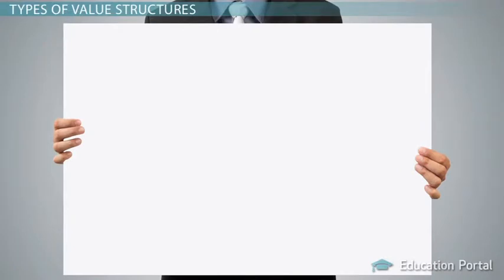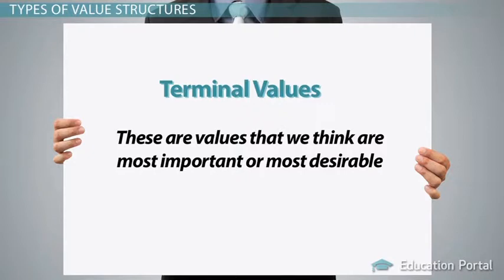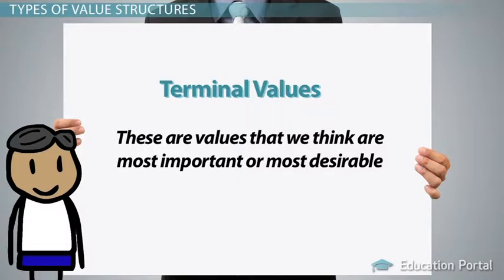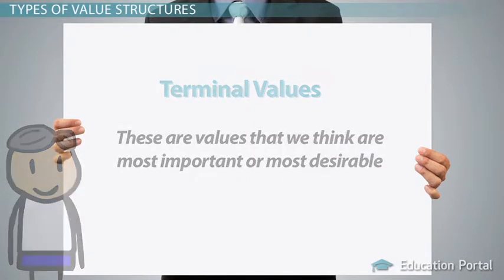There are four basic value structures. Terminal values. These are values that we think are most important or most desirable. They are desirable states of existence that we will work towards or try to reach. They include, but are not limited to, happiness, self-respect, recognition, inner harmony, and professional excellence.